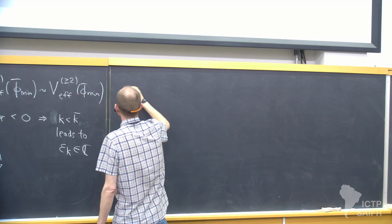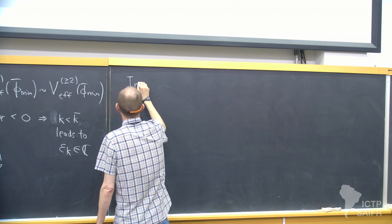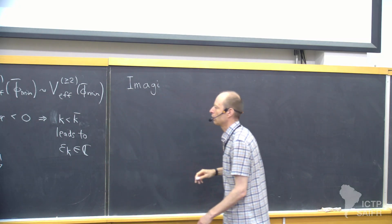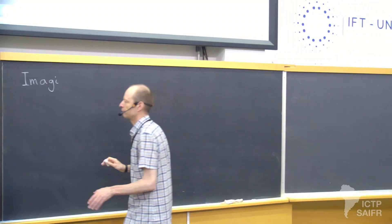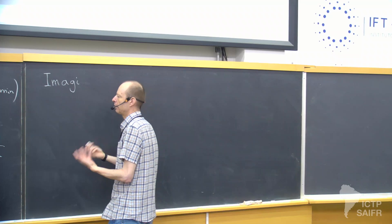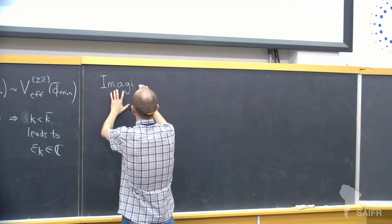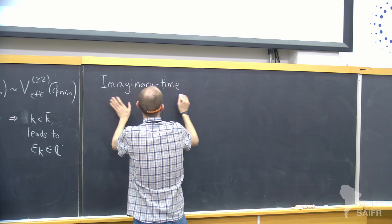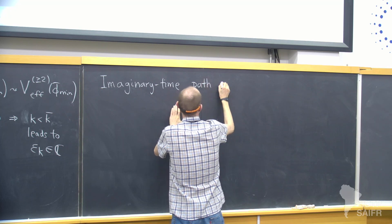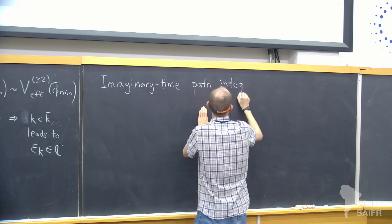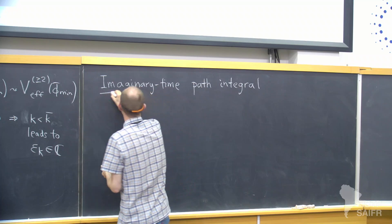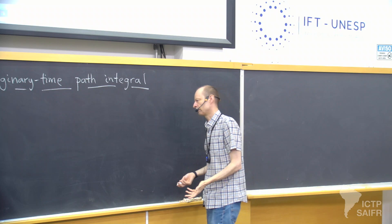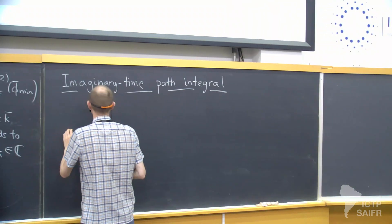The first thing is the imaginary time formalism. It's not necessarily the only way to do it, but I think it's a very clean way of finding a controlled approximation. I'll first give a derivation of this imaginary time path integral, and then once we have it at hand, we can use it to formulate the problem such that we don't have these issues.